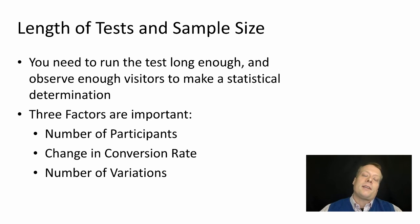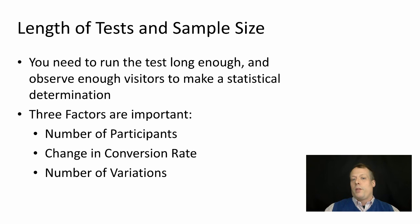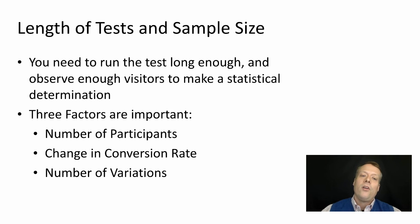The way you determine this is through statistics that tell you once you've observed enough samples to make a statistically significant determination that the means of these two conversion rates are different from each other. For instance, if the click-through rate on A is 0.3 and on B is 0.36, at what point can you make the decision that 0.36 is meaningfully different? There are methods to determine this, and there are three factors that are important in making that determination.